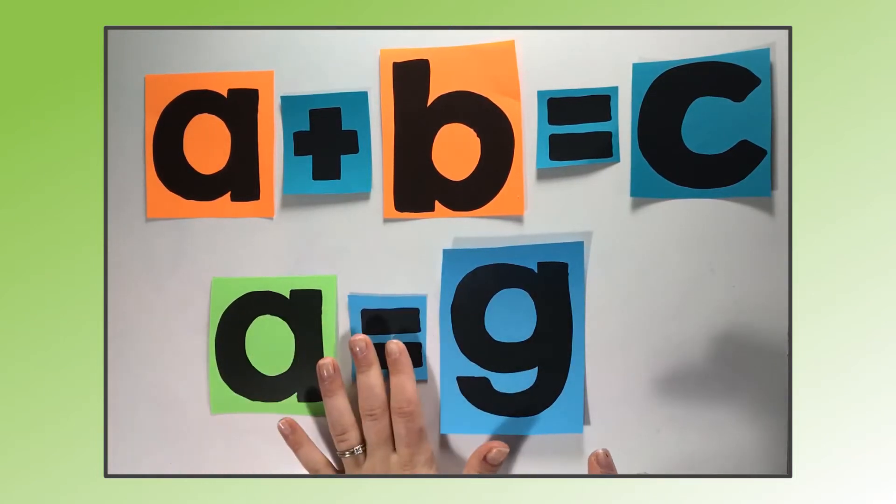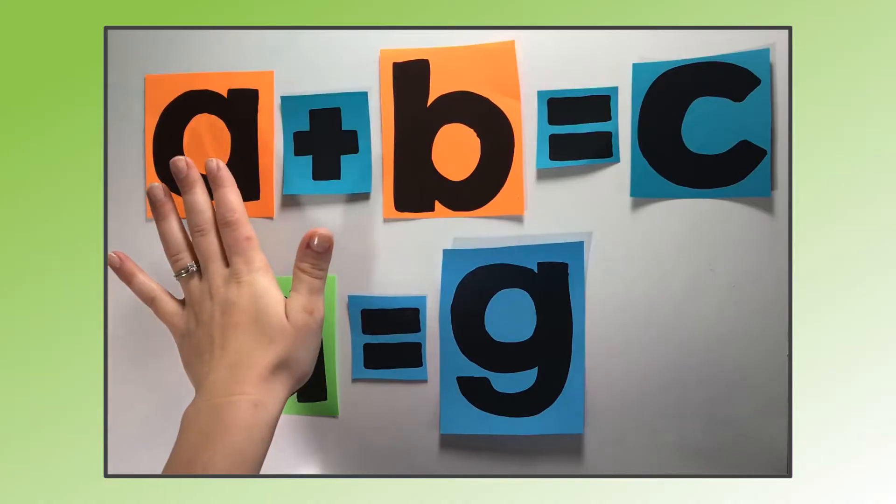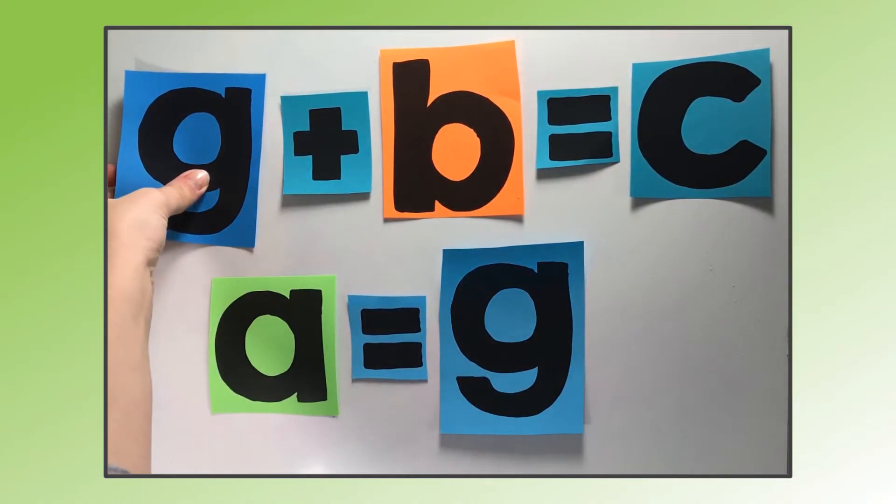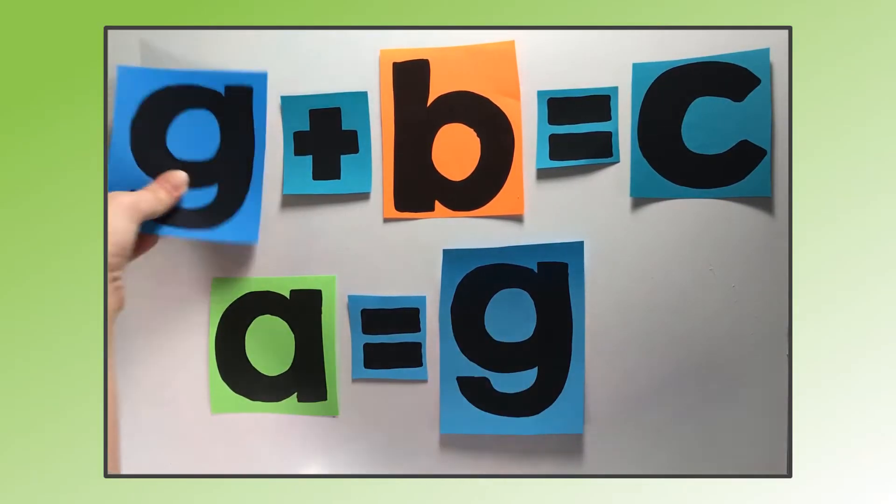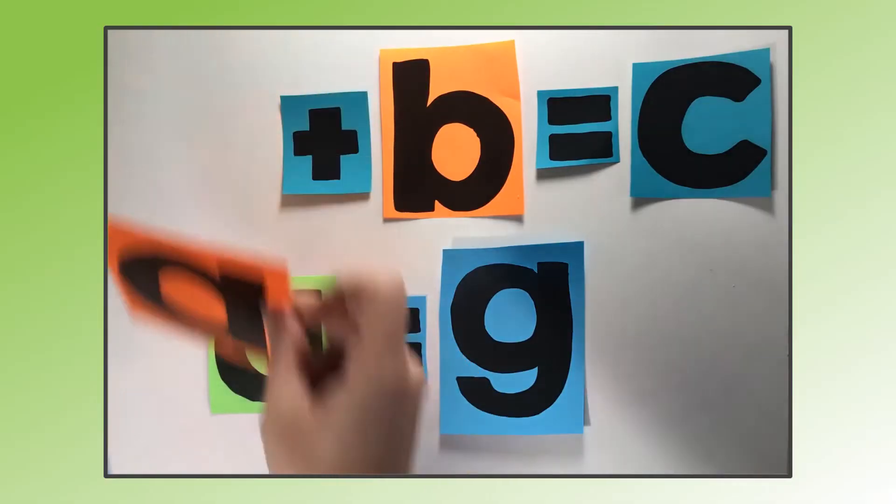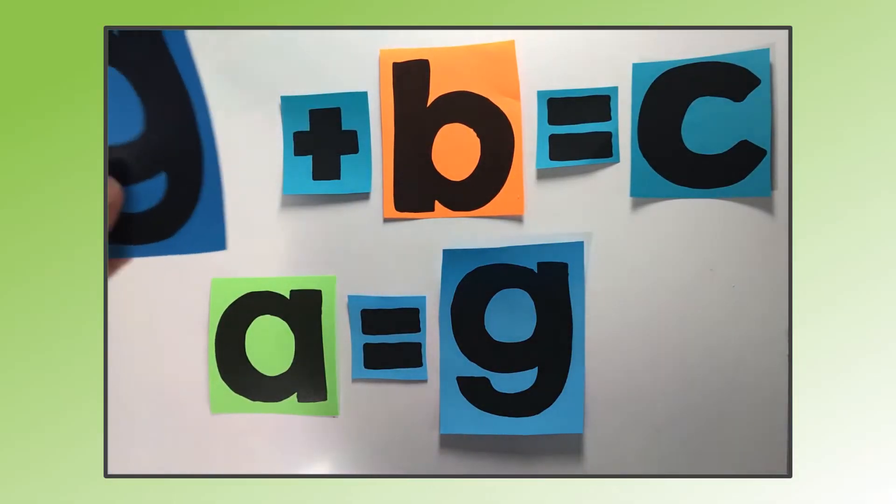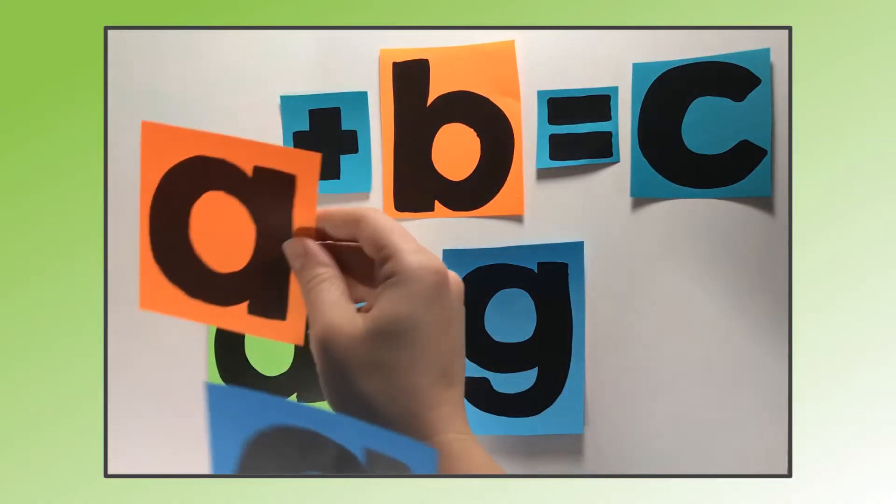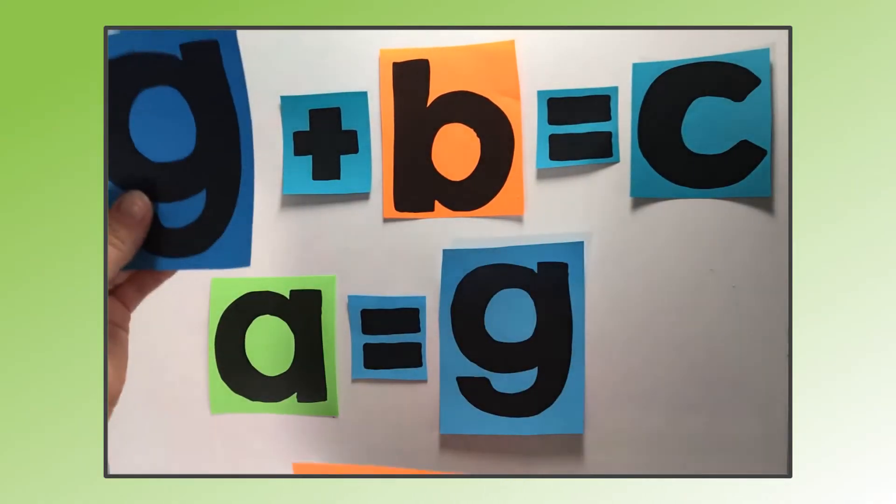Since a is equal to g, we can replace a with g and make a new equation. We could write that on a new line. When two things are equal, we can replace one with the other, and we know that our equations will still be true. That is substitution. Since a is equal to g, we can replace a with g. Substitution is replacement of one piece.